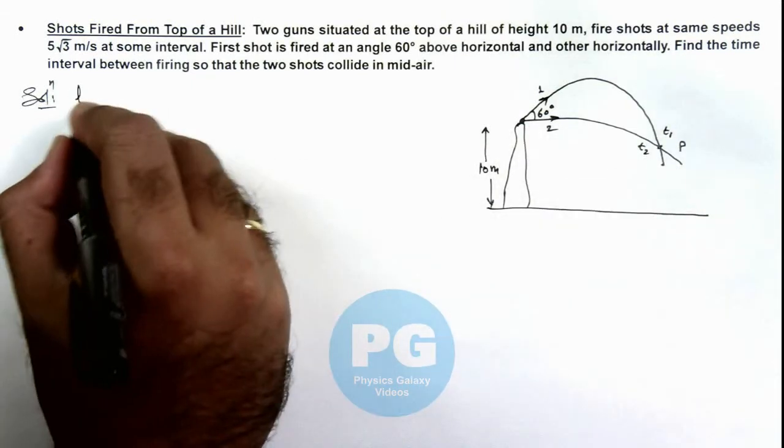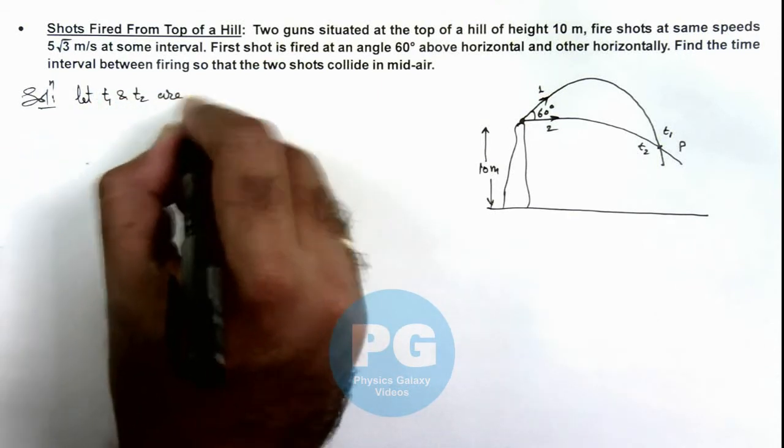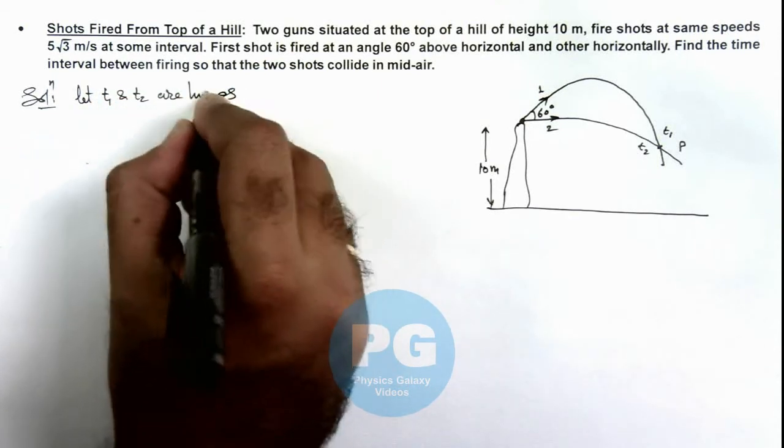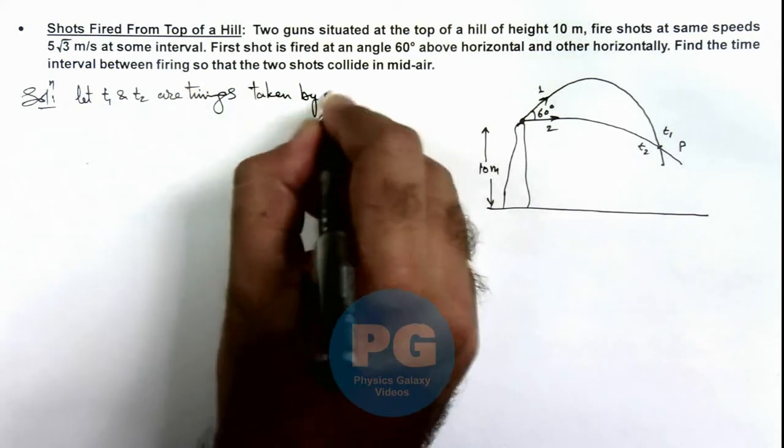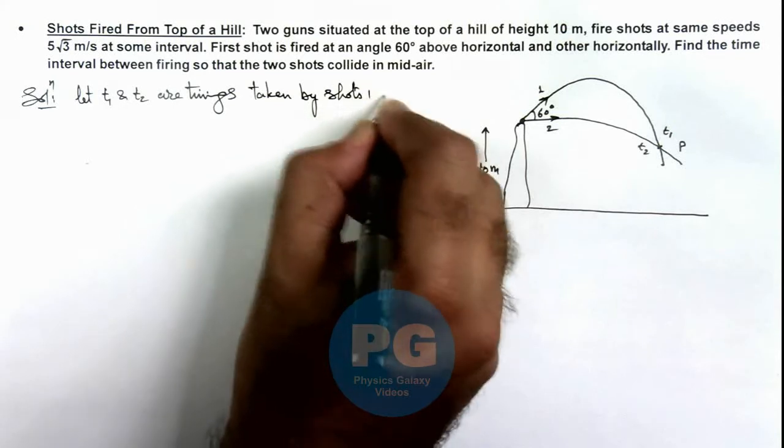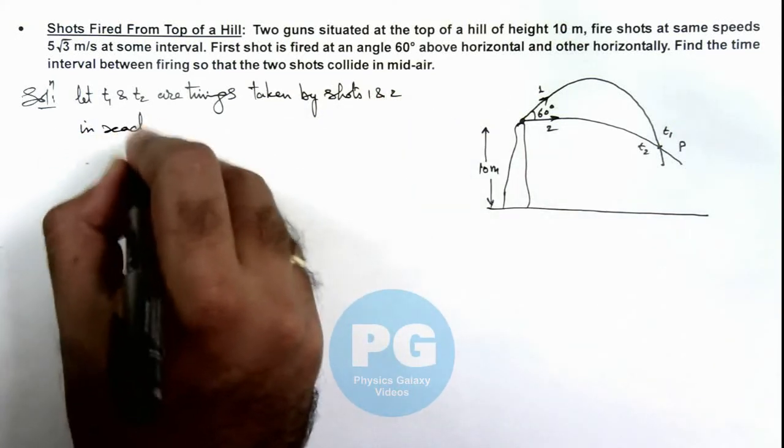Here we can write let t1 and t2 are timings taken by shots 1 and 2 in reaching point p.